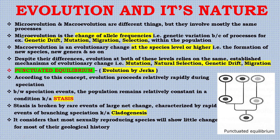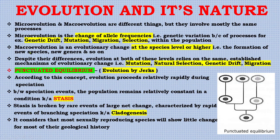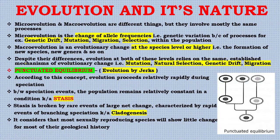Micro-evolution and macro-evolution are different things but involve mostly the same processes. Micro-evolution is the change of allele frequencies — genetic variation — due to processes such as genetic drift, mutation, migration, and natural selection within a population. Macro-evolution is evolutionary change at the species level or higher, involving formation of new species and new genera. Despite their differences, both levels rely on the same established mechanisms: mutation, natural selection, genetic drift, and migration.